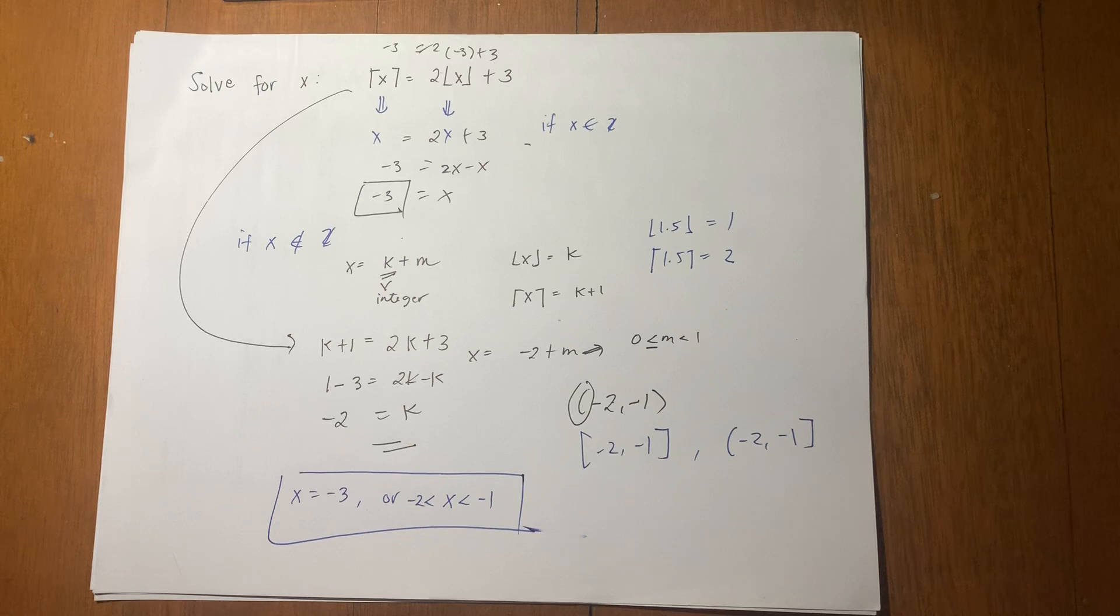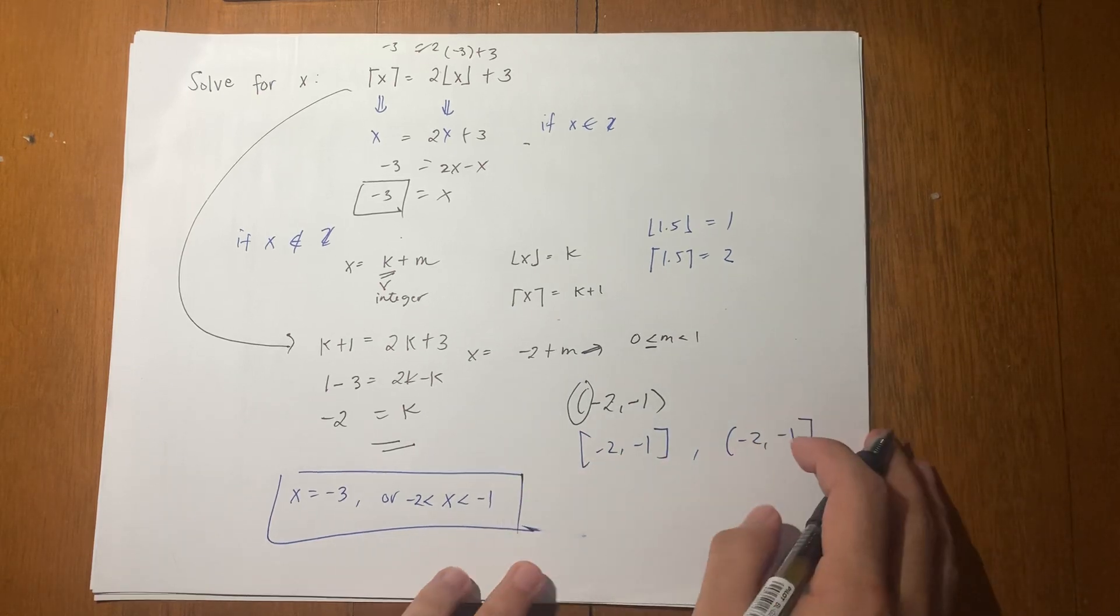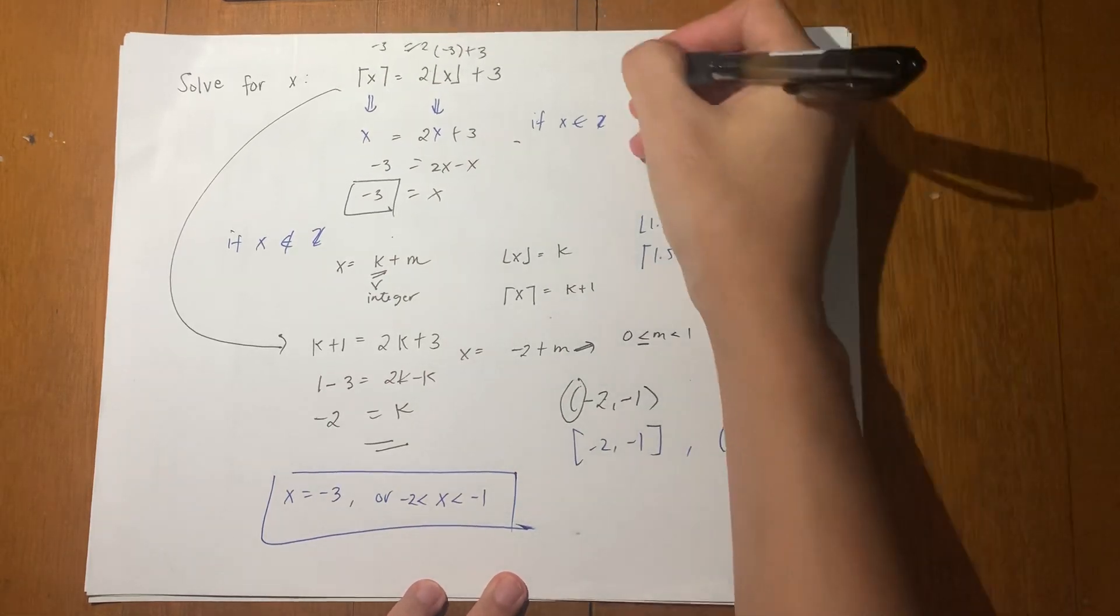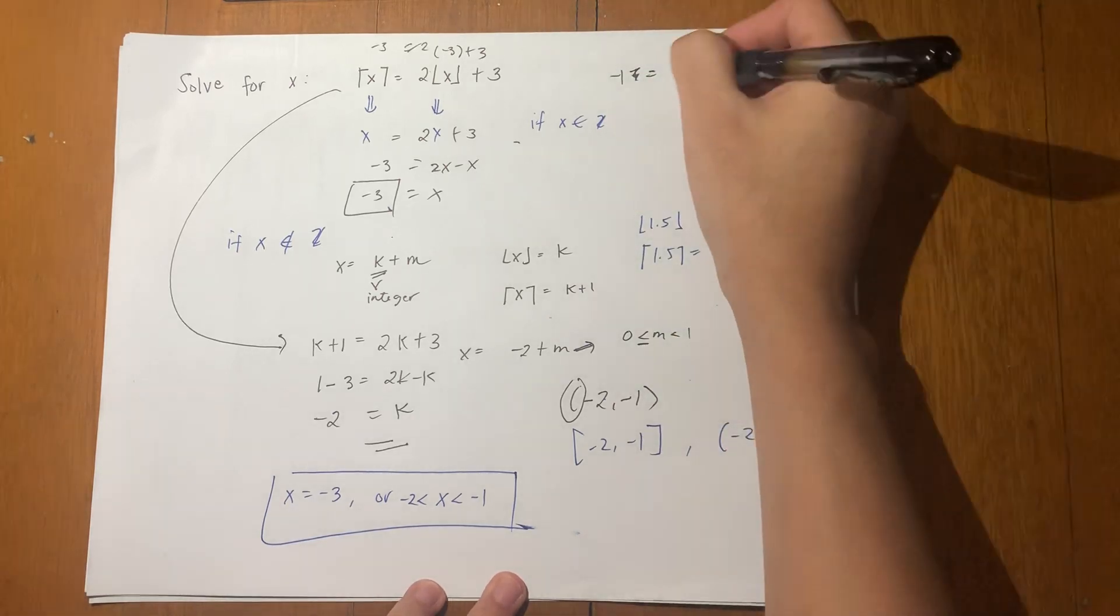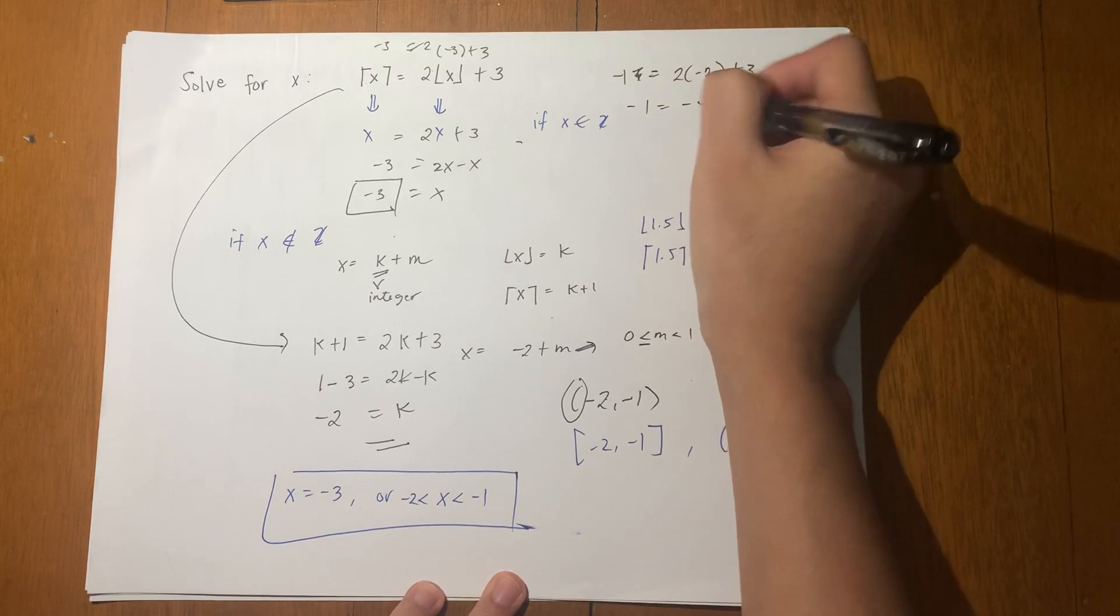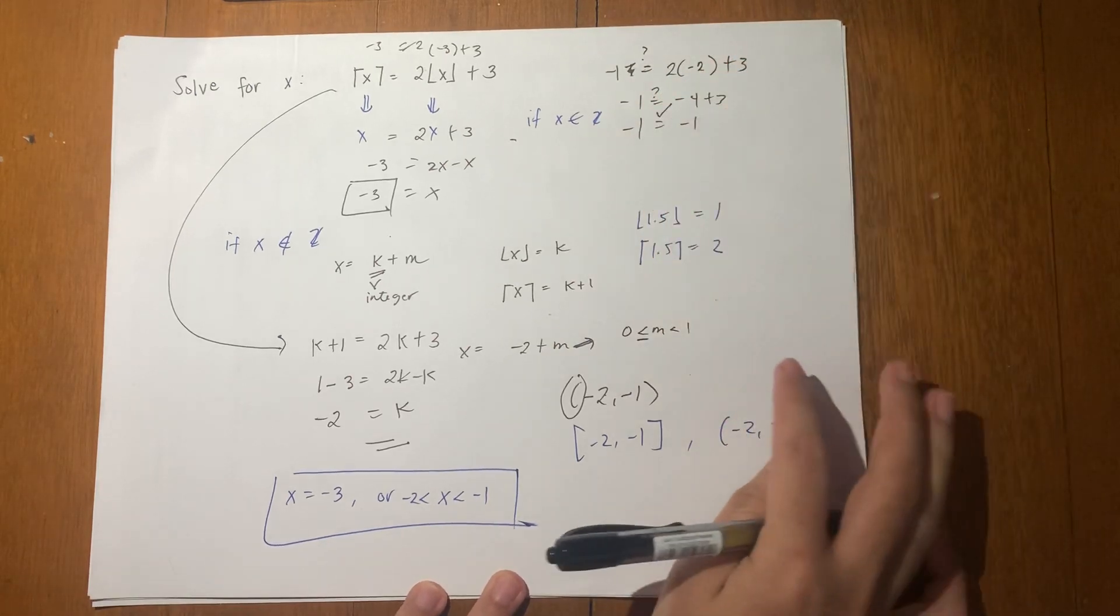Although we haven't checked yet, we can try something between negative 2 and negative 1, let's say negative 1.5. The ceiling of negative 1.5 is negative 1. The floor of negative 1.5 is negative 2. So you get negative 1 equals negative 4 plus 3, which is negative 1. This checks out.